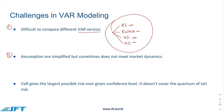The second challenge is that assumptions are simplified but do not meet market dynamics. For example, the variance-covariance approach assumes that returns are normally distributed. While this is applicable in most situations, there are times when returns are not normally distributed. In that scenario, the assumption of normality would not be applicable, and the results generated would not be reliable.